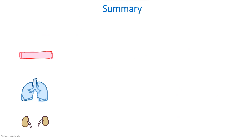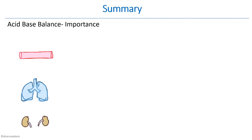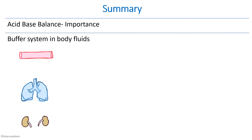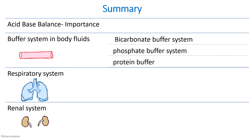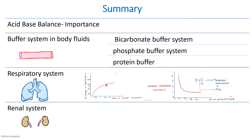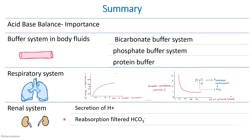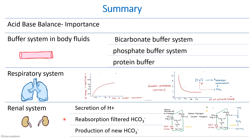To summarize: when answering a question on acid-base balance, first write about its importance, then cover the three main systems. The first line of defense is the buffer system in body fluids — bicarbonate, phosphate, and protein buffer systems. The second is the respiratory system — how ventilation rate changes pH, supported by graphs. The third is the renal system — secretion of H+, reabsorption of filtered bicarbonate, and production of new bicarbonate, including the molecular mechanisms discussed.